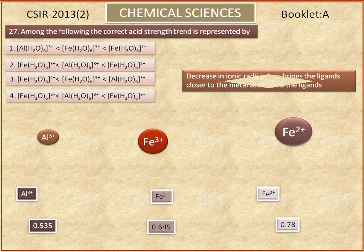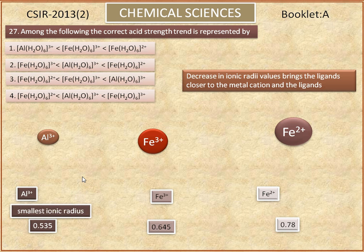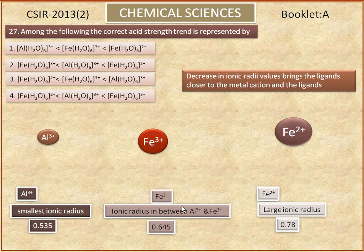Decrease in ionic radii values brings the ligands closer to the metal cation. Aluminum 3+ has the smallest ionic radius, while ferrous ion has the largest ionic radius. The ionic radius of ferric ion lies in between Al 3+ and Fe 2+.